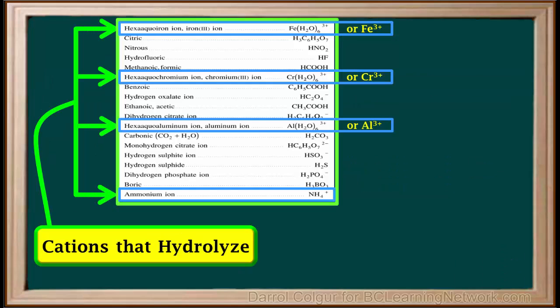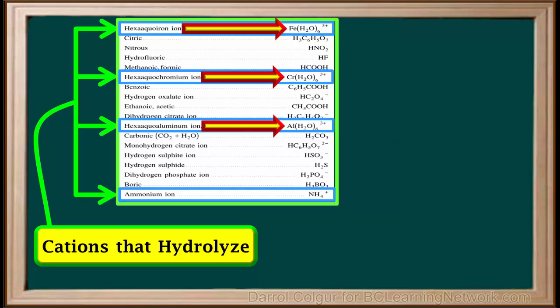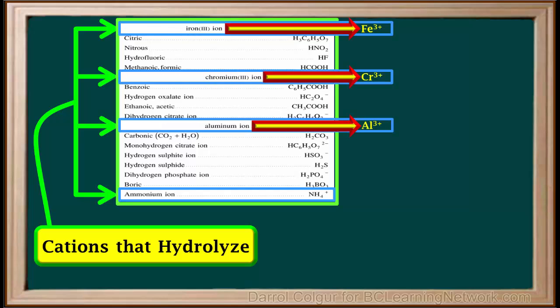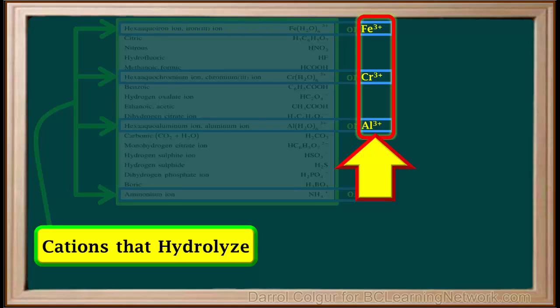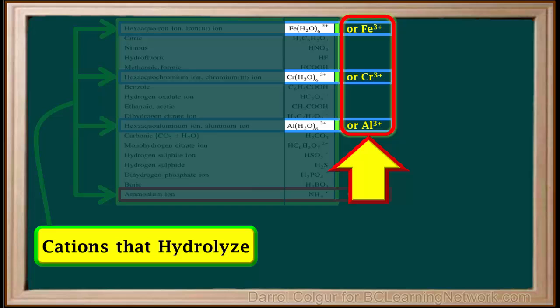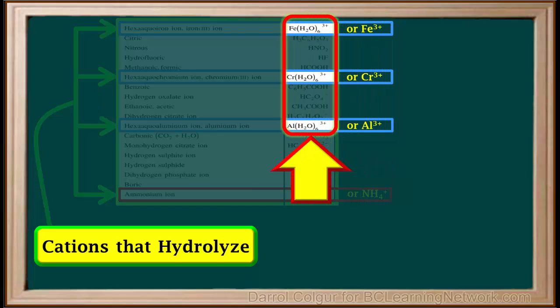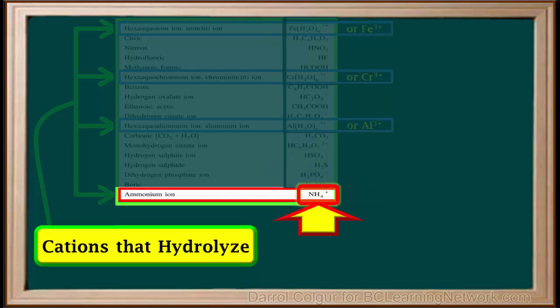In Chemistry 12, these are the four cations that hydrolyze — they all undergo acid hydrolysis. Notice the three hydrated cations, iron-3, chromium-3, and aluminum, can be depicted either in their hydrated or hexa-aqua form, or in the form of simple ions with a 3+ charge. When you dissociate a salt, you are likely to see these cations depicted in the simple form. If you need to write a hydrolysis equation for one of these three, you must convert them to their hydrated form. The other hydrolyzing cation, ammonium, always appears as NH4+, or in compound formulas, as NH4.